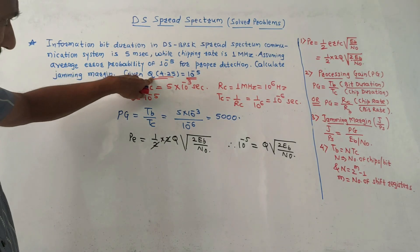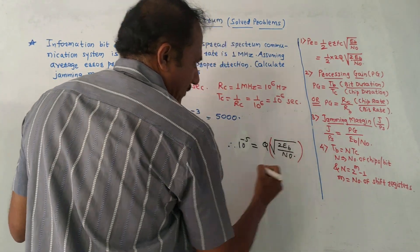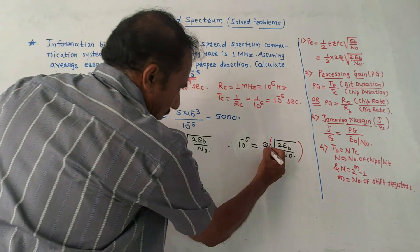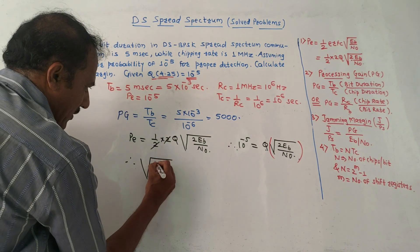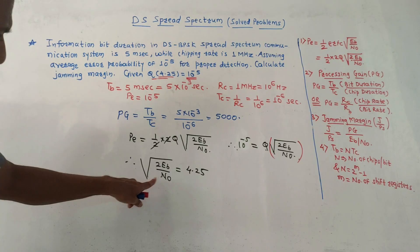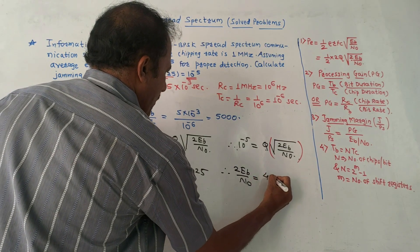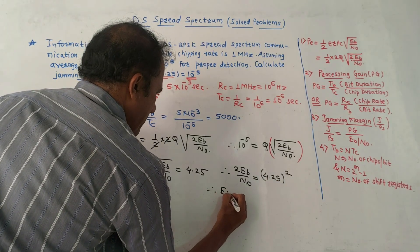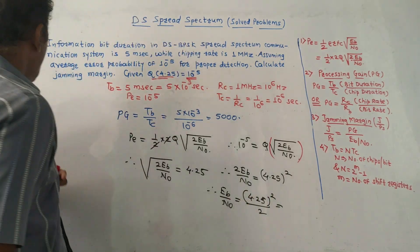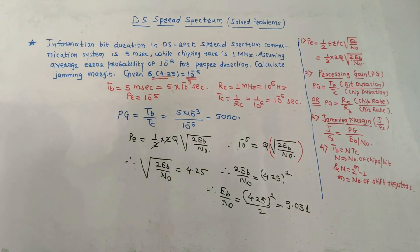Look at the given data: Q of 4.25 is 10 raised to minus 5. We have the bracket term inside Q, that is Q of square root of 2 EB upon N0. From the given value, Q of 4.25 is 10 raised to minus 5, so I can write square root of 2 EB upon N0 equals 4.25. To eliminate the square root, take square on both sides: 2 EB upon N0 equals 4.25 squared. Therefore EB upon N0 equals 4.25 squared divided by 2, which gives EB by N0 equals 9.031.